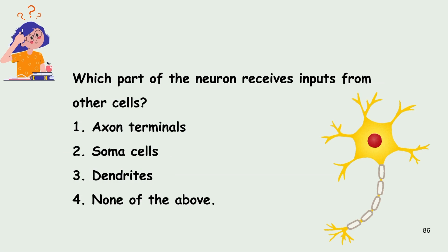Now the last question: which part of the neuron receives input from other cells? 1) Axon terminal, 2) Soma cells, 3) Dendrites, or 4) None of the above. The answer is 3 — dendrites are the part of the neuron that receives input from other cells.